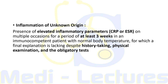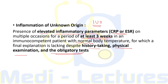A recent update introduces a closely related entity: inflammation of unknown origin (IUO). It has the same definition as PUO except that instead of elevated body temperature, there are elevated inflammatory parameters like CRP or ESR on multiple occasions over at least three weeks in an immunocompetent patient with normal body temperature, for which no explanation is found despite history, examination, and obligatory tests. Since causes and workup for IUO are similar to PUO, the term FUO will refer to both for the rest of this lecture.